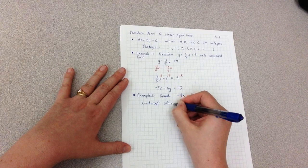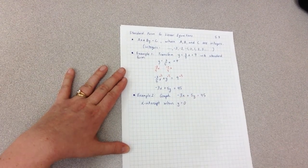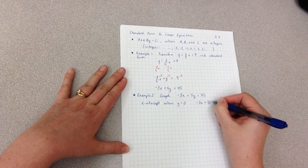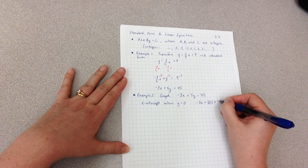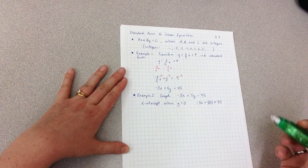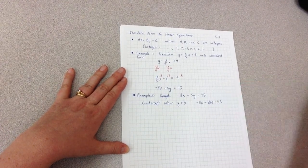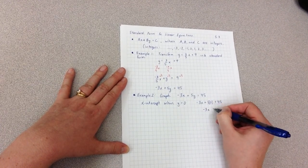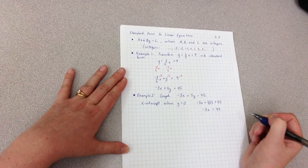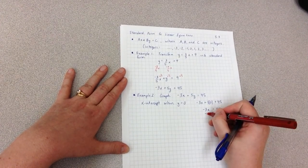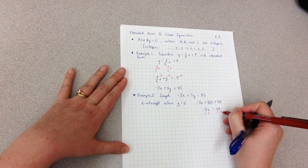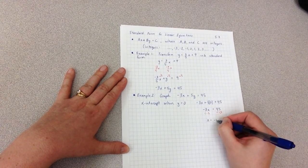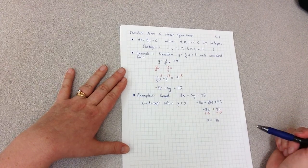So I plug 0 in for y. Now 5 times 0 is 0, so I can simplify this to be negative 3x equals 45. To solve for x, I'm going to divide by negative 3, so I get x equals negative 15.